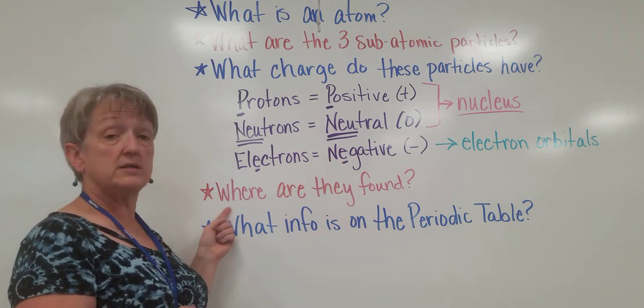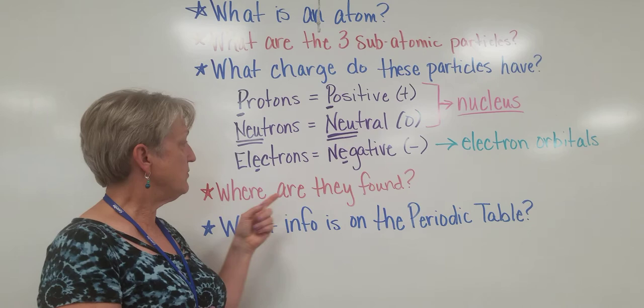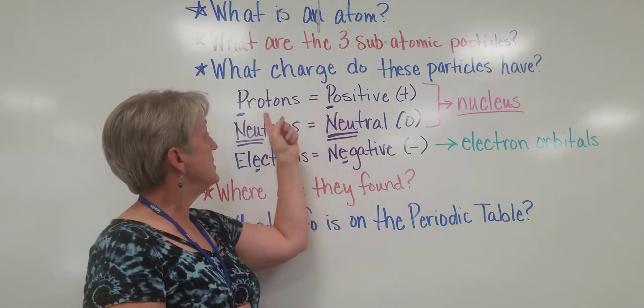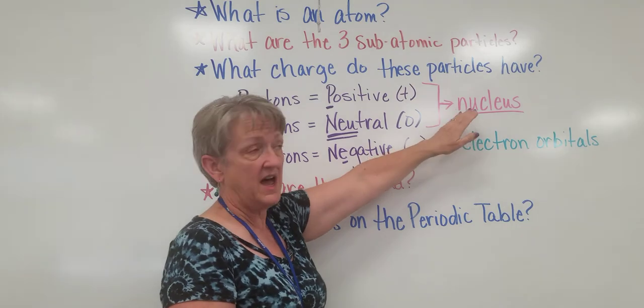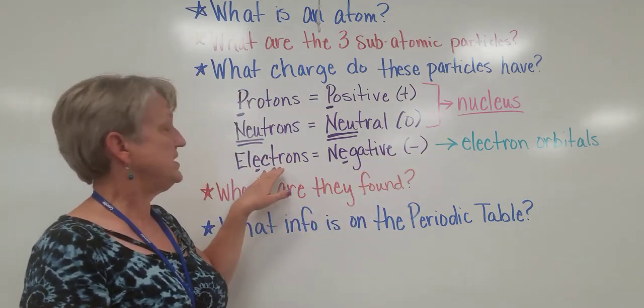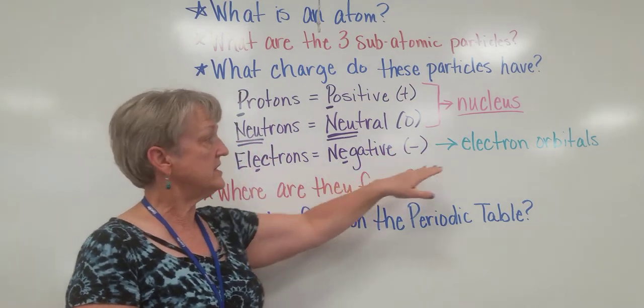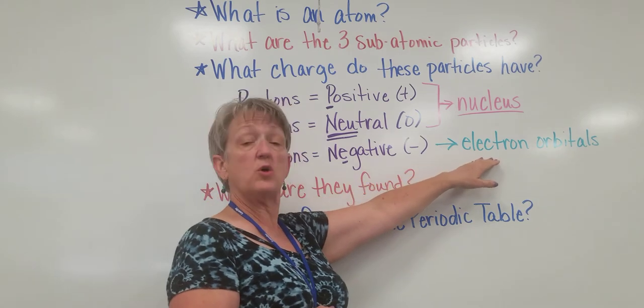We talked about where you can find all these particles. And we learned that protons and neutrons are both found in the nucleus of the atom. We then learned that electrons are found in electron orbitals around the nucleus.